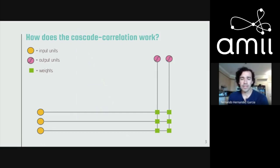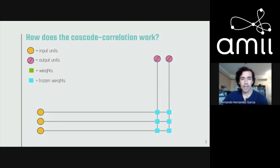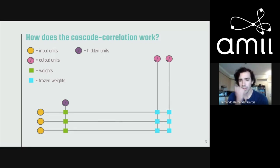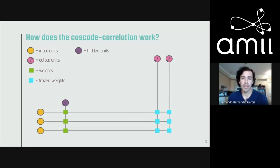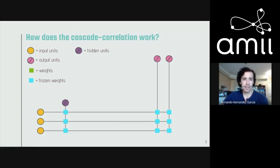We continue minimizing the loss function until it converges, at which point we can decide to add a new hidden unit. We first freeze the output weights and then connect a new hidden unit to the network. This hidden unit is connected to the input nodes but not yet to the output layer. To train this hidden unit, we maximize the correlation between its activation and the residual error of the network — in plain words, we want this unit to be most active for data points with the highest error.